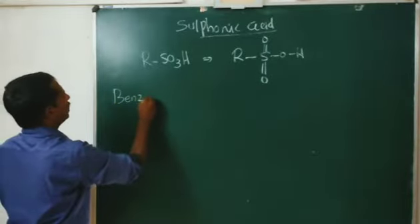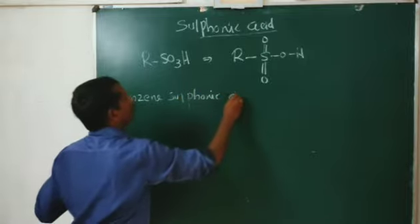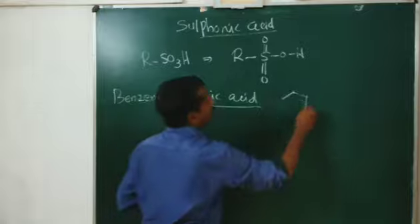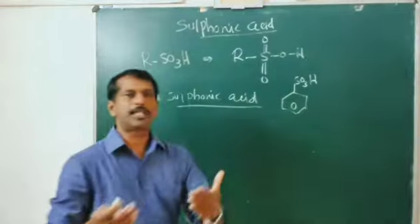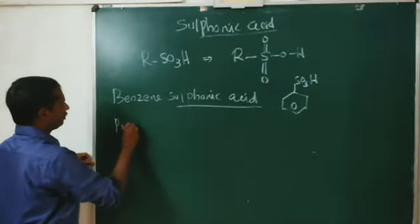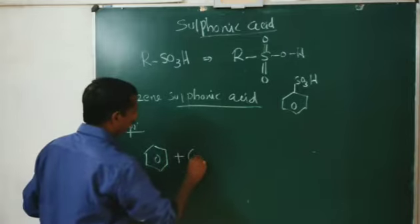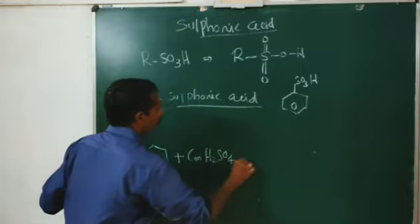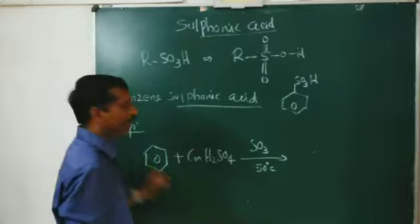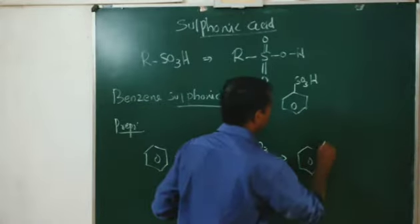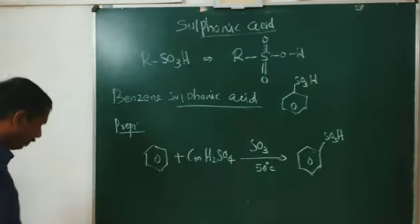Benzene sulphonic acid. The structure is a benzene ring with SO3H. We have studied its preparation. We know that when benzene is treated with concentrated H2SO4 in presence of sulphur trioxide at 50 degrees Celsius, we get benzene sulphonic acid. This is the method of preparation of benzene sulphonic acid.